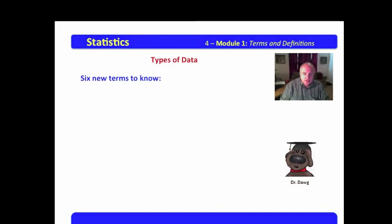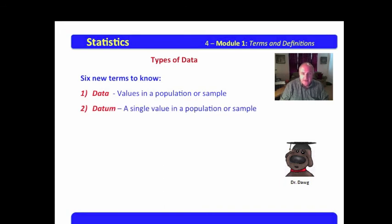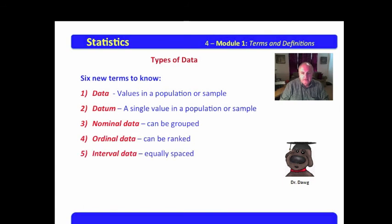Now, there are six new terms to know. So the first of these is data, values in a population or sample. Datum, a single value in a population or sample. Now remember, the data are of interest to us and the datum is of interest to us. Nominal data can be grouped, ordinal data can be ranked, interval data are equally spaced, and ratio data are data for which comparison makes sense. Now, these terms, these types of data are important to us because they will later on determine the processes that we use to evaluate them.